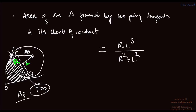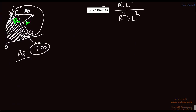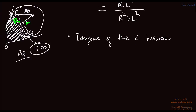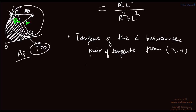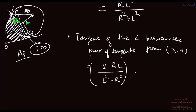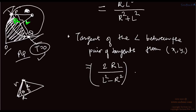The tangent of the angle between the pair of tangents from any point x1, y1 is given by 2RL divided by L squared minus R squared. These are straightforward results. If you know the points O, P, and Q, you can directly derive them using T equals 0 for the equation, and then using trigonometry and algebra to find theta, the radius R, and the perpendicular distance L.